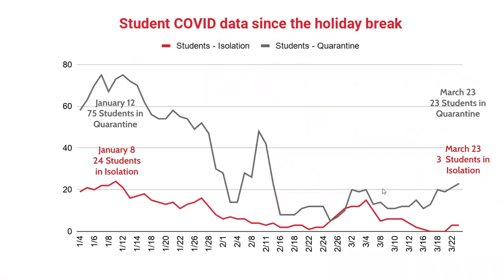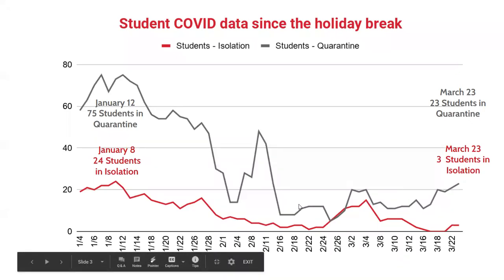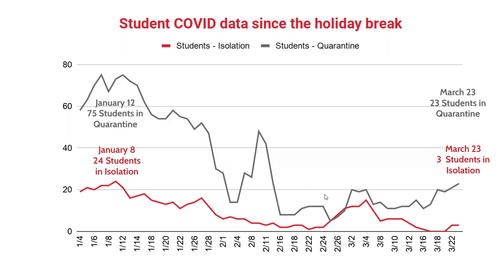Let's talk a little bit about our COVID numbers first. This is a student graph, and if you've watched board meetings, you've seen me present this every Monday since we came back from the holiday recess. The gray line is quarantine and the red line is isolation. Isolation means these are students that had COVID. The gray line represents students who might have been exposed. After the holiday break there was a little jump, but it was a steady decline after that.